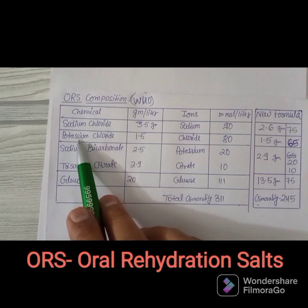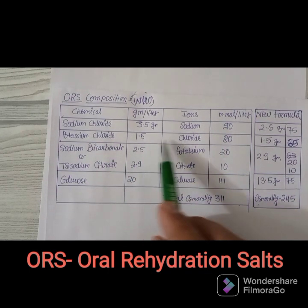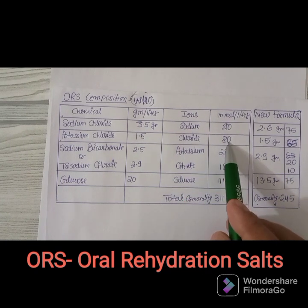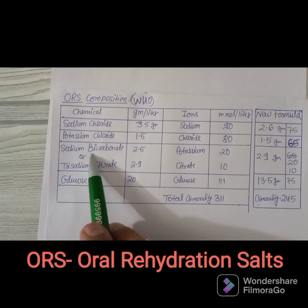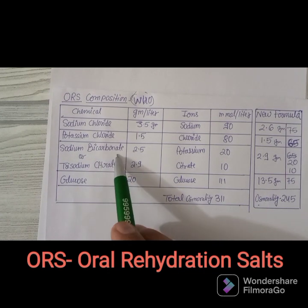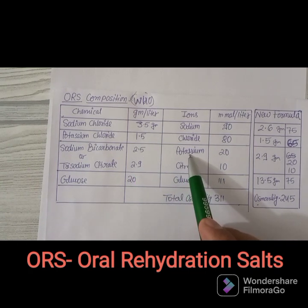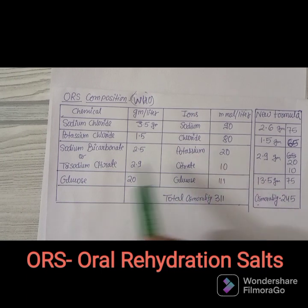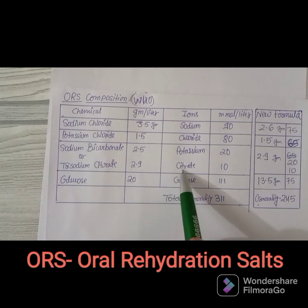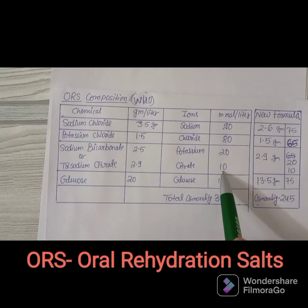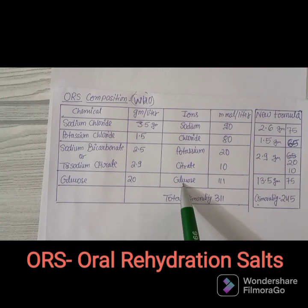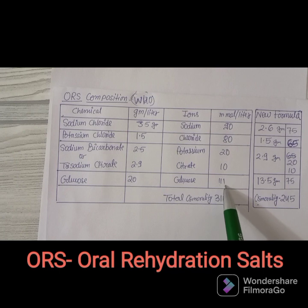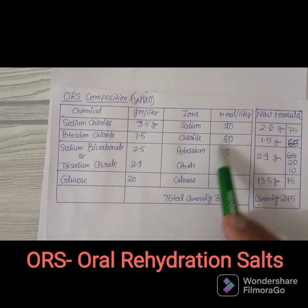The third ingredient is sodium bicarbonate at 2.5 grams per liter, providing a potassium ion of 20 millimoles per liter, or trisodium citrate at 2.9 grams per liter with a citrate ion of 10 millimoles per liter. Glucose is 20 grams per liter with 111 millimoles per liter. The total osmolarity of this old formula is 311 millimoles per liter.